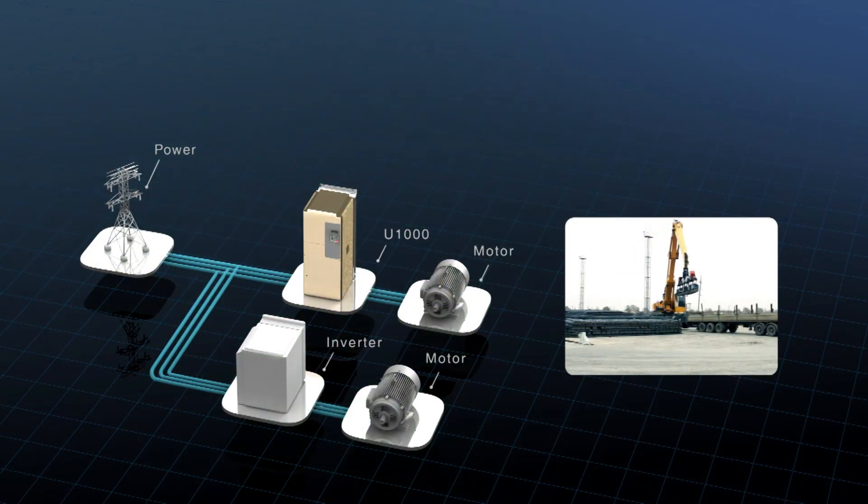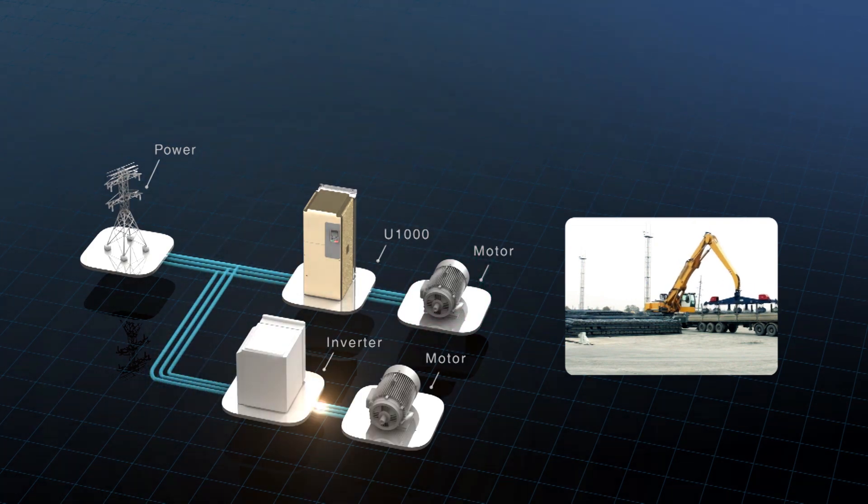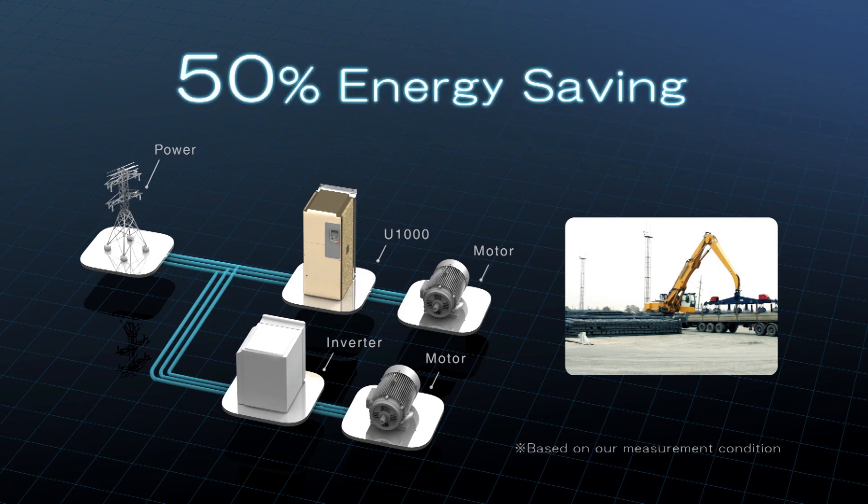The Yaskawa Matrix converter U-1000 can save up to 50% of previously wasted energy by transferring energy to other equipment.